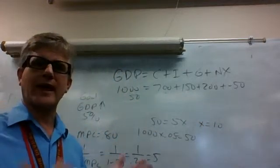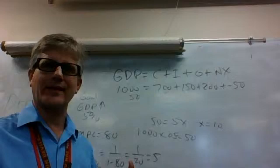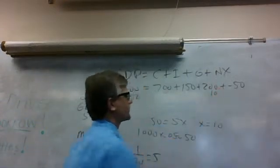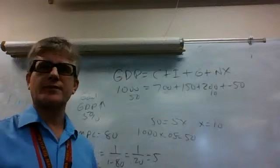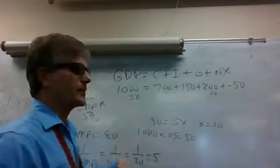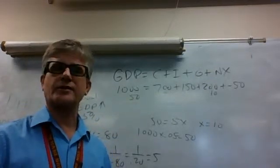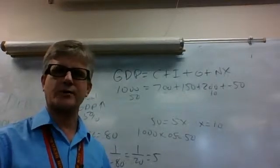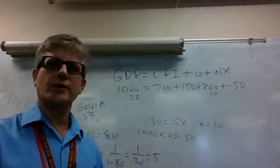So what we're going to do is, that x is 10, and that goes into government spending. So we're going to put that under the 200. So now we have government spending of 10. We have the increase in GDP of $50. There is not equal.